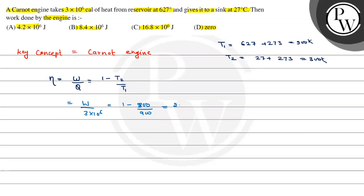This becomes 1 - 1/3, which equals 2/3. So work done becomes 2/3 × 3 × 10^6, which equals 2 × 10^6 calories.